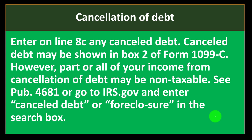Cancellation of debt: enter on line 8C any canceled debt. Canceled debt may be shown in box two of Form 1099-C. For example, if you had a loan and negotiated with the bank to cancel some of the debt, the IRS treats that as income — you received money you no longer have to repay. Form 1099-C is less common but can appear from time to time, and you'd need to report the related income.